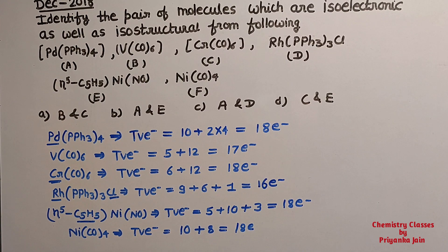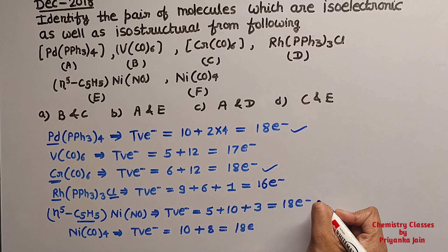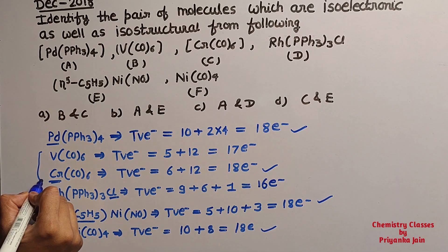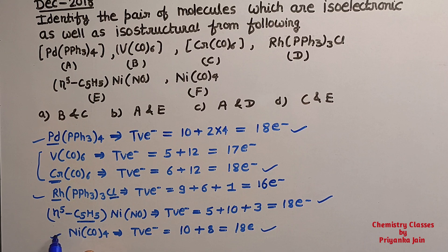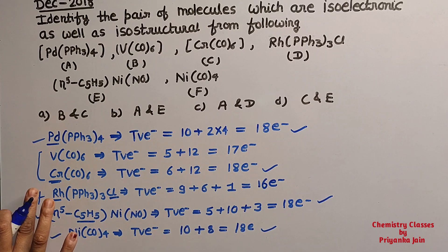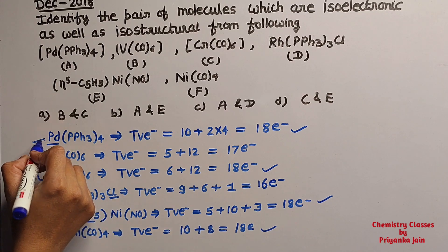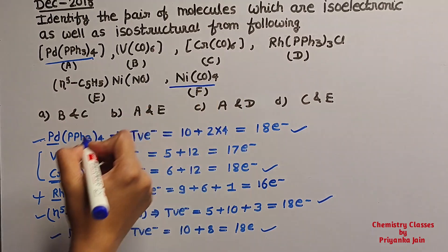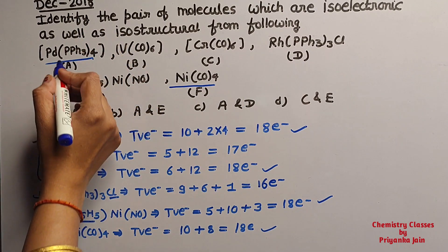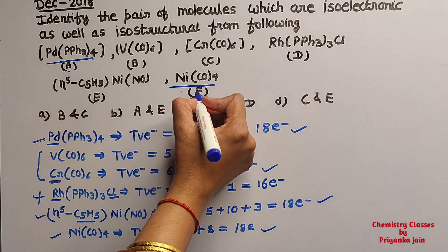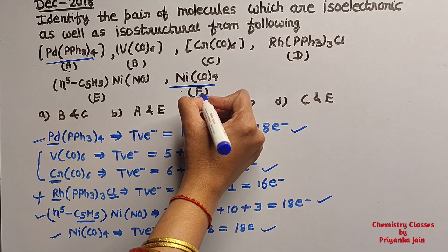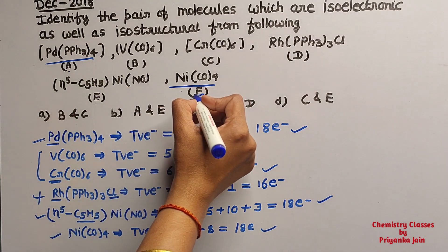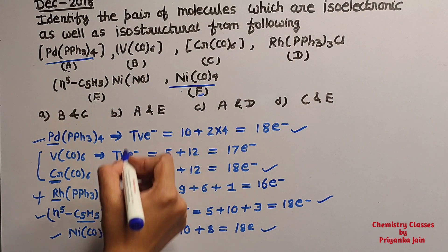The same number of electrons — 18 — are present in Pd(PPS3)4, Cr(CO)6, η5-C5H5NiNO, and Ni(CO)4. Of these, two are 6-coordinated and two are 4-coordinated. The 16-electron species Rh(PPS3)3Cl is not the answer. The 4-coordinated species are Ni(CO)4 and Pd(PPS3)4, which are both isoelectronic and isostructural. So the answer is Ni(CO)4 and Pd(PPS3)4.